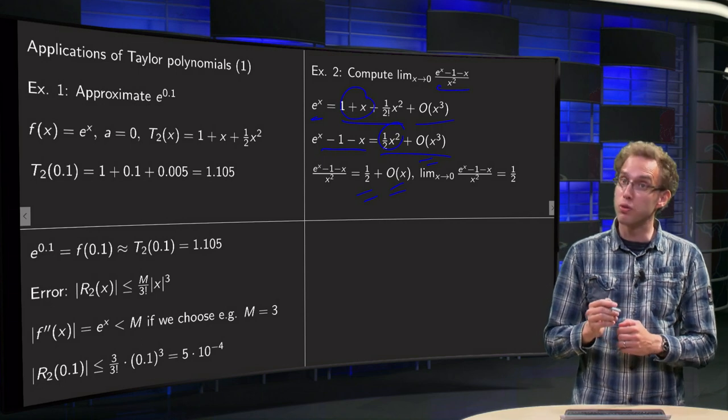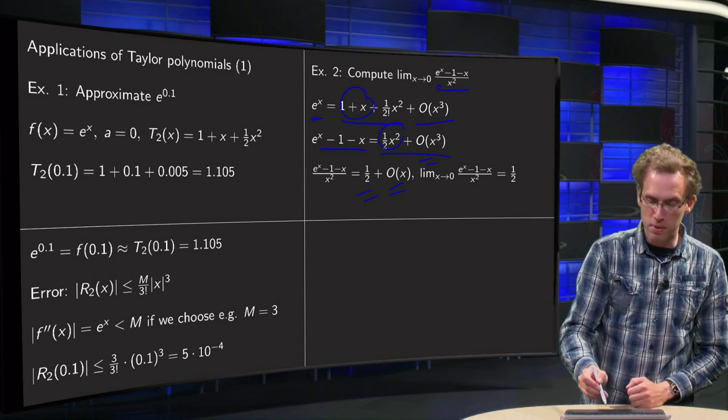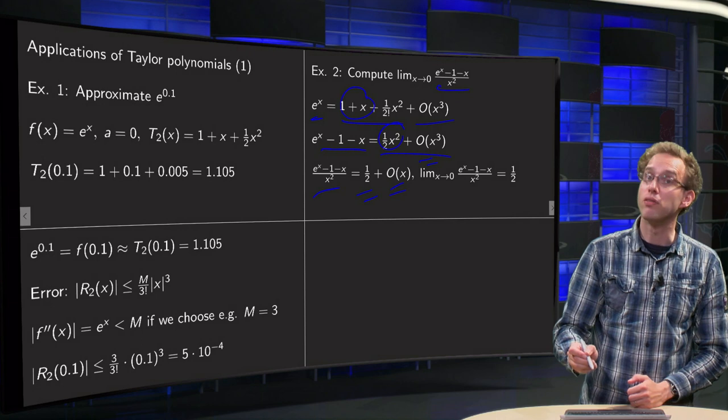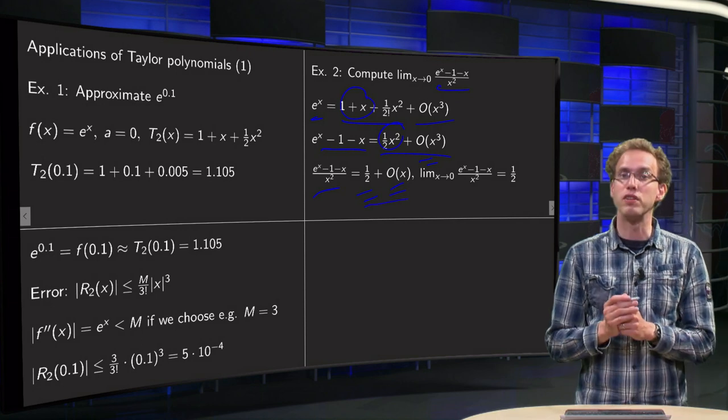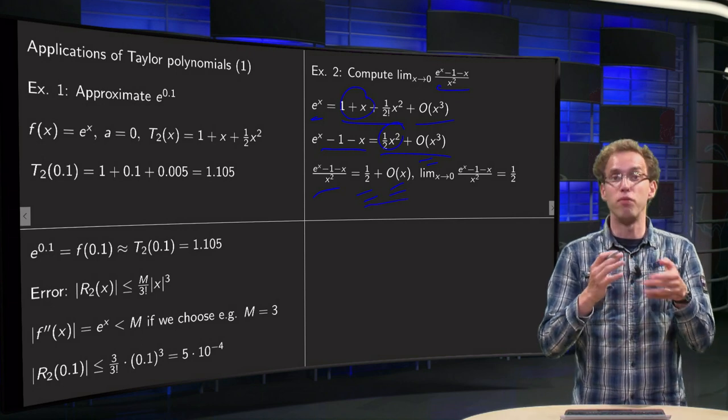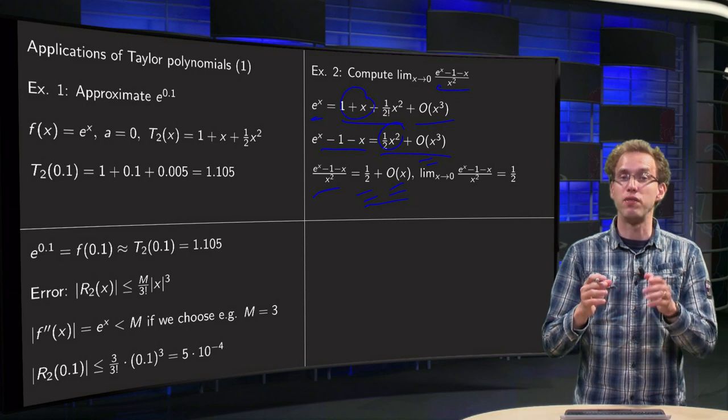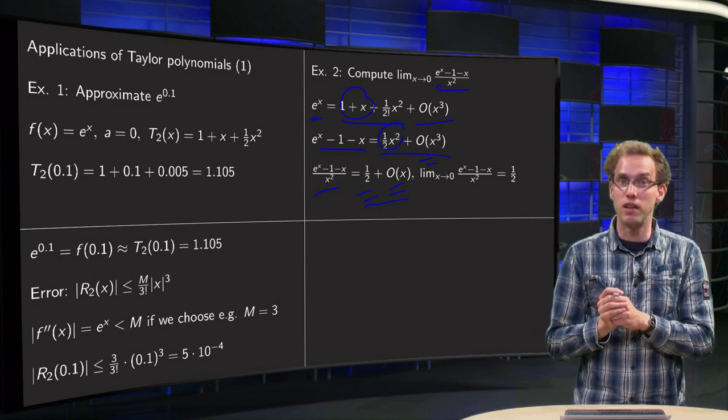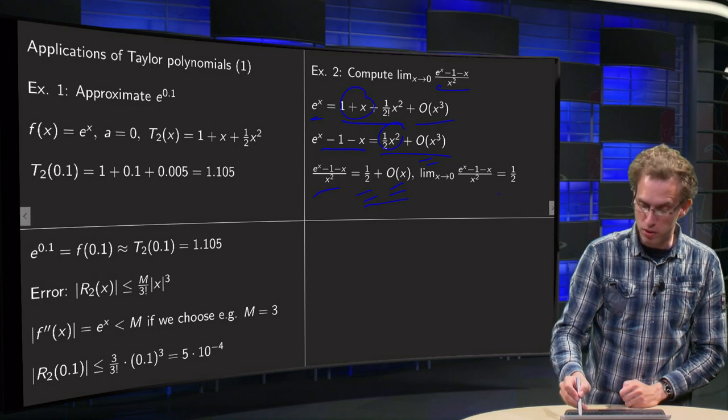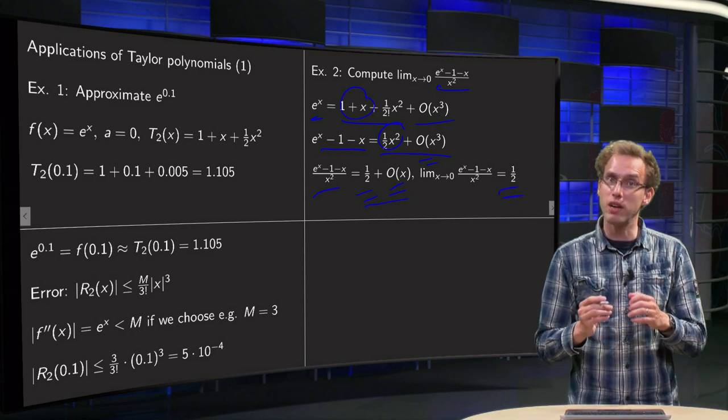And now we want to compute this limit. If you take the limit x to 0 of this quotient, you have to take the limit x to 0 of this expression over there. Half becomes just 1 half, and if you have terms of x, x squared, etc, they in this limit are 0. So my limit equals 1 half, so there you are.